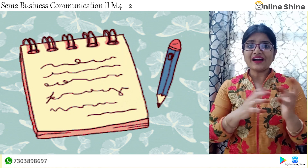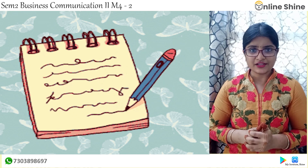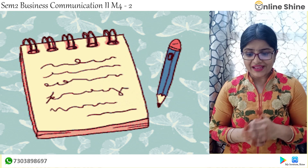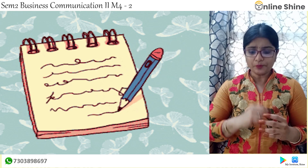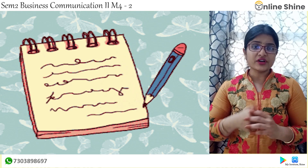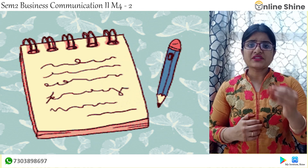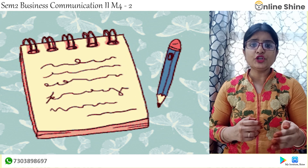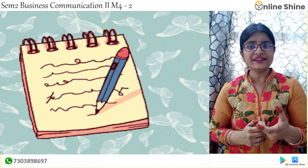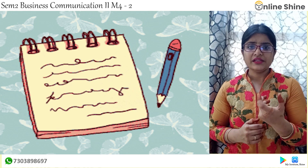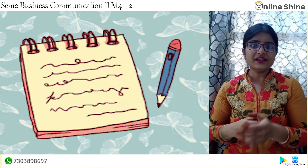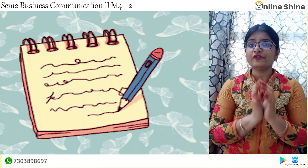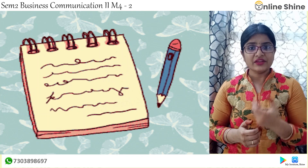The second point is: make use of one word substitution. For example, if I say 'a person who is not able to read and write,' I can say that he is illiterate. So make use of one word substitutions for giving a good summary.